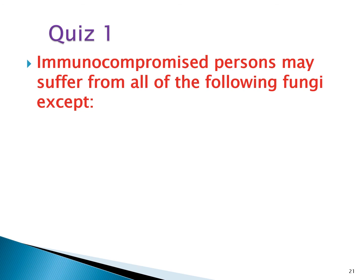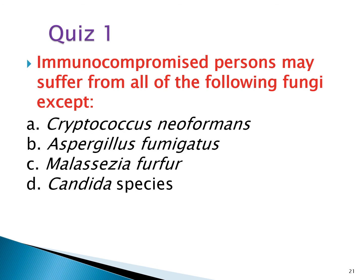Quiz 1: Immunocompromised persons may suffer from all of the following fungi except — Cryptococcus neoformans, Aspergillus fumigatus, Malassezia furfur, or Candida species? The answer is Malassezia furfur, because it causes superficial mycosis, not opportunistic mycosis. Cryptococcus, Aspergillus, and Candida are all opportunistic fungi affecting immunocompromised patients.